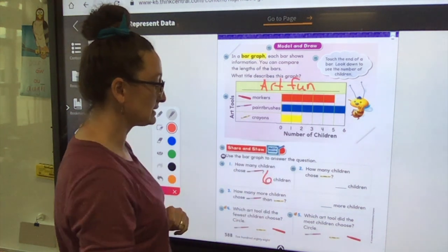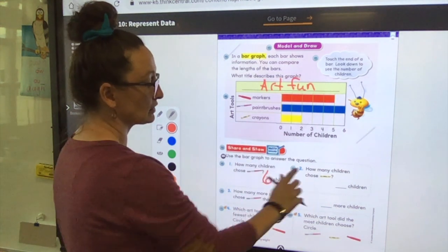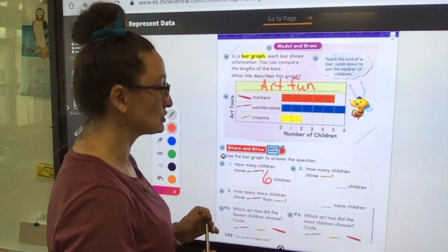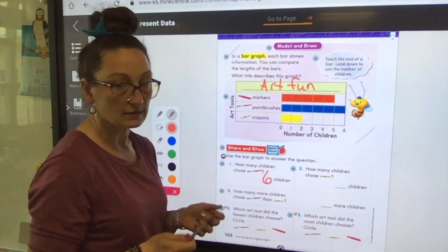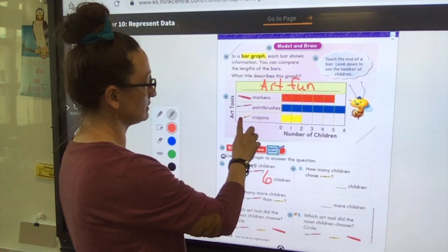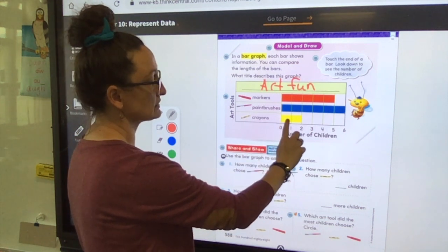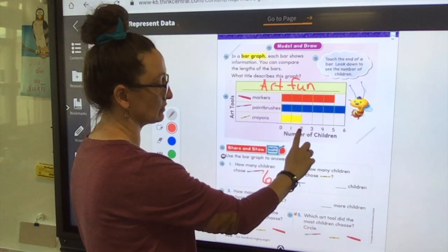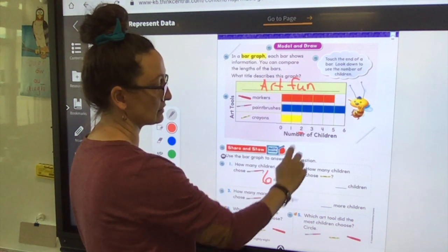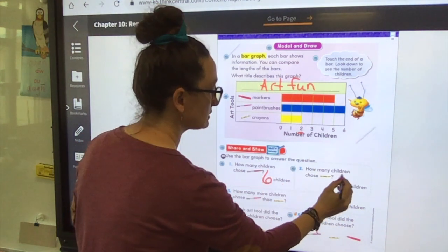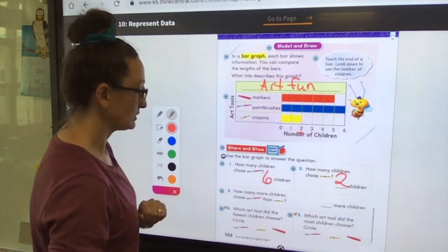Okay, look at number two. How many children chose crayons? Got a picture of a crayon, so let's go up to crayons, follow it over. Where does the yellow stop and then go down? What number is there? Two. All right, so let's put a number two.